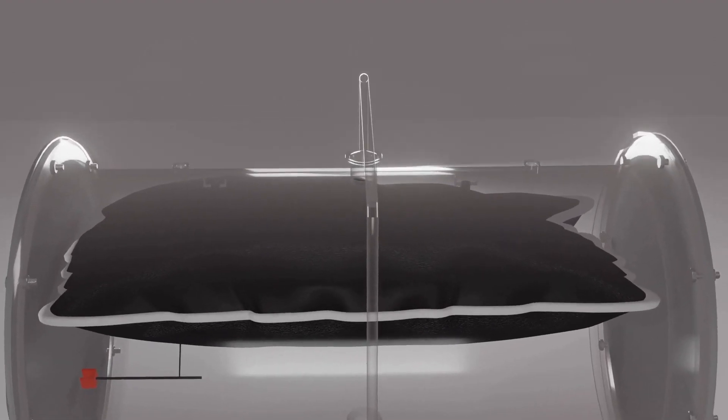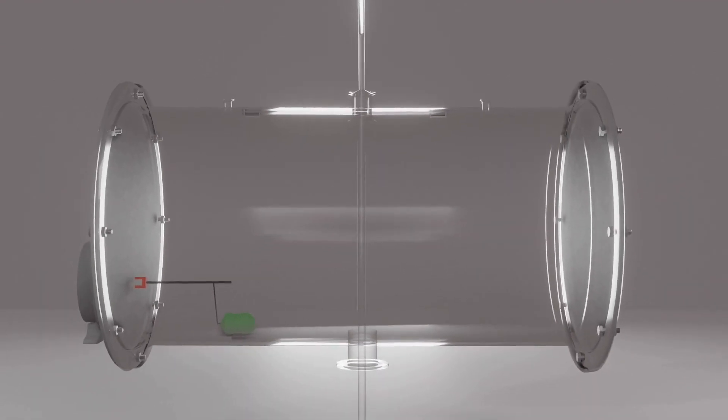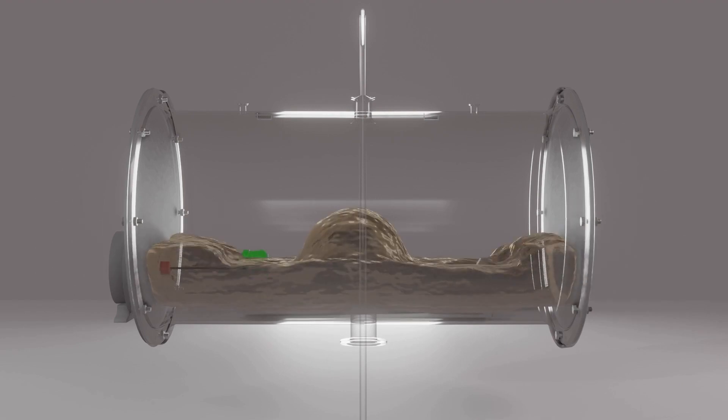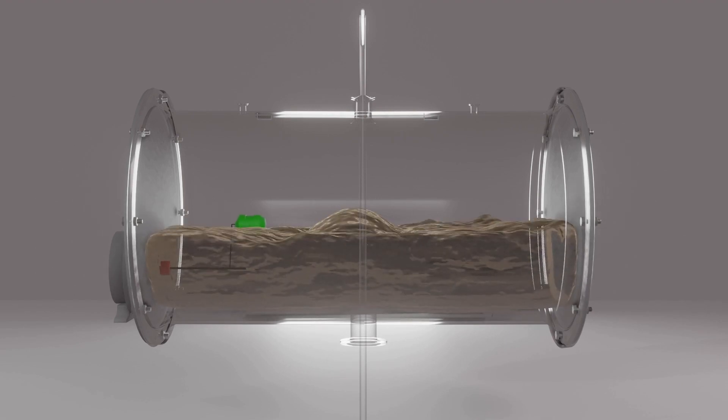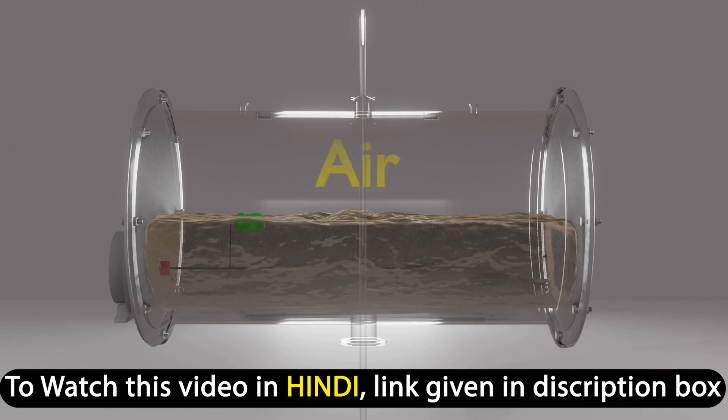Let's first start with why air cells are required in transformer conservator tanks. In the past, air cells were not given in conservator tanks. At that time, 50% of the space was reserved for oil and the remaining 50% was kept empty, in which air is present.